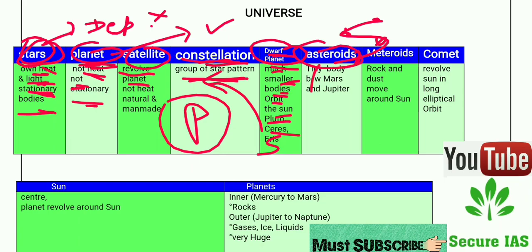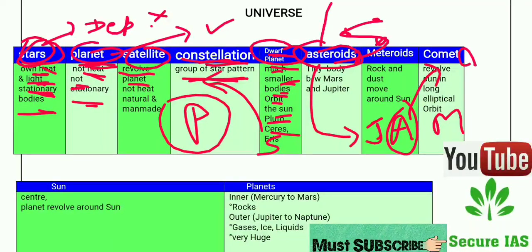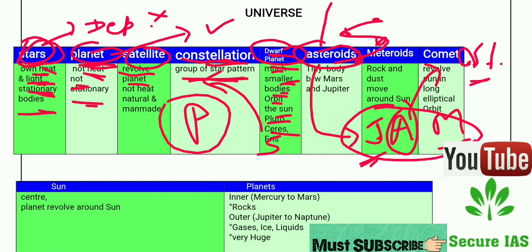To remember asteroids, use the mnemonic 'JAM' — where J stands for Jupiter, A for Asteroid, and M for Mars. Asteroids are bodies found between Mars and Jupiter. Using the word JAM, we will never forget between which planets asteroids are located.